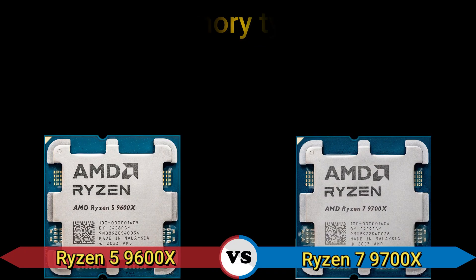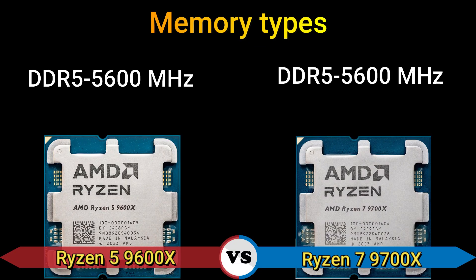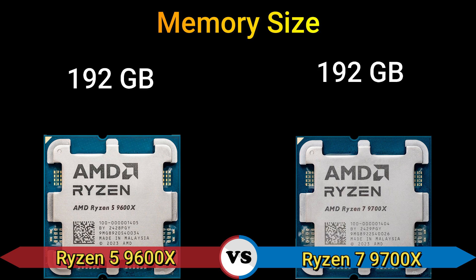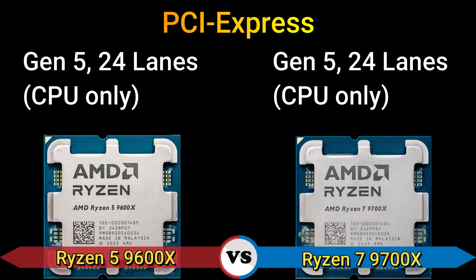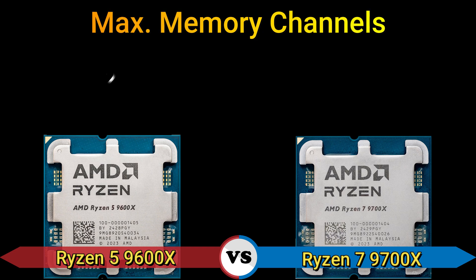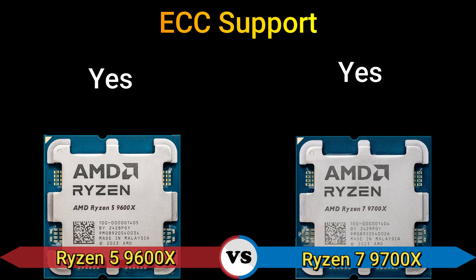Part 4: Memory. Memory type: DDR5, 5600 MHz. Memory size: 192 GB. PCIe: Zen 5, 24 lanes, CPU only. Max memory channels: 2. ECC support: yes.